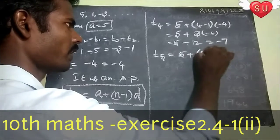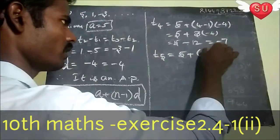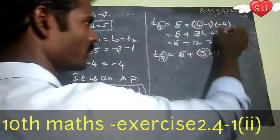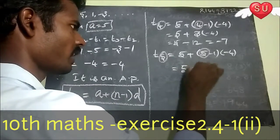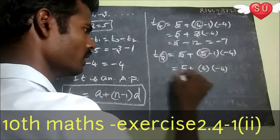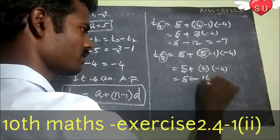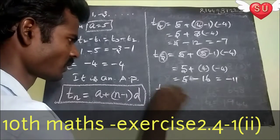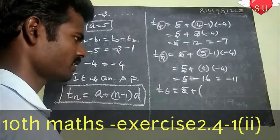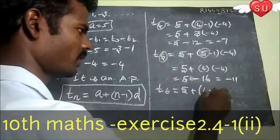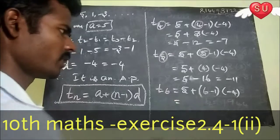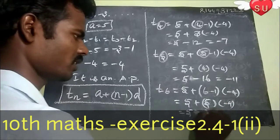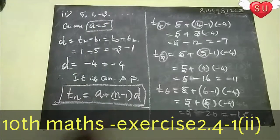Next value is minus 7. Next, T5 is 5 plus (5 minus 1) into minus 4. So d value is minus 4. T5 equals 5 plus 4 into minus 4, which is 5 minus 16, so minus 11. Next, T6 equals 5 plus (6 minus 1) into minus 4. So now 5 plus 5 into minus 4 is 5 minus 20, which is minus 15. Therefore the next 3 terms are found.